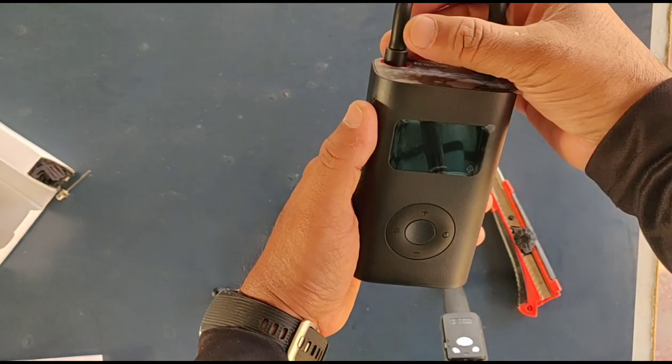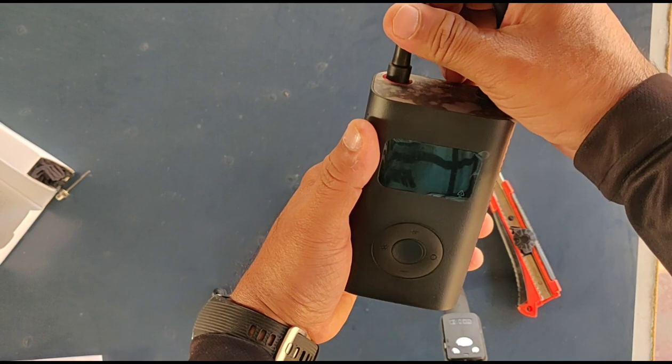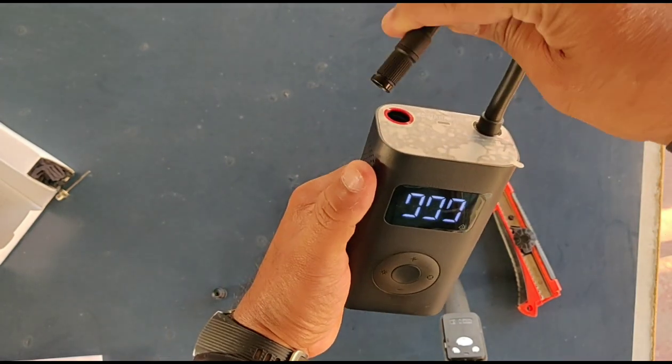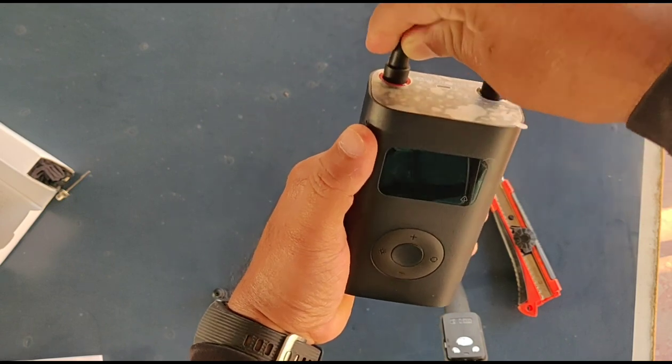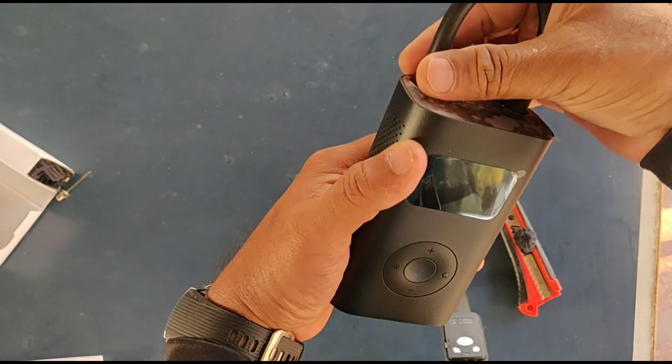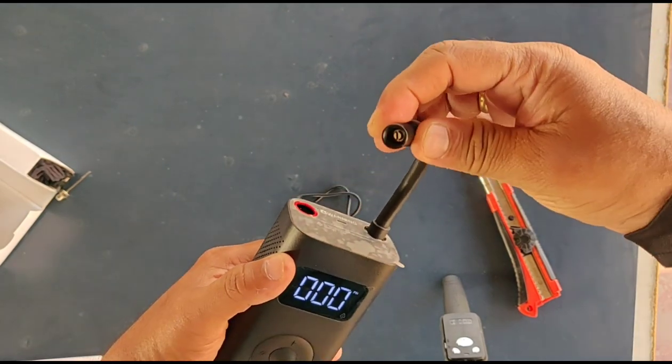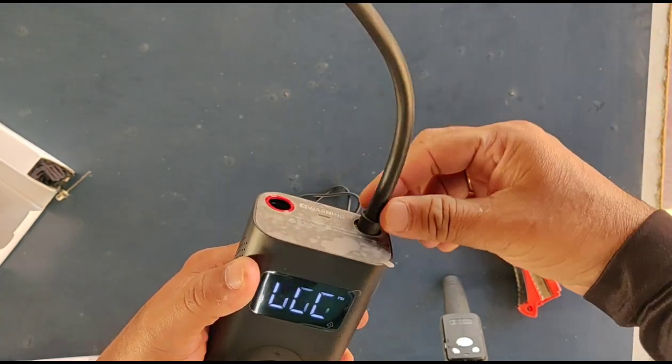To turn on this machine, you need to pull this wall out and the machine will come on. When you put it back, it goes off. So this is the Schrader valve, and this is the air pressure hose.